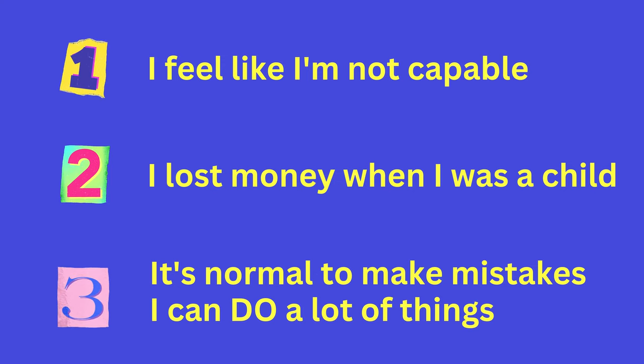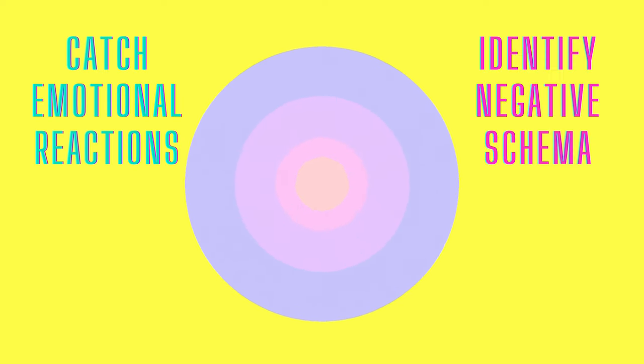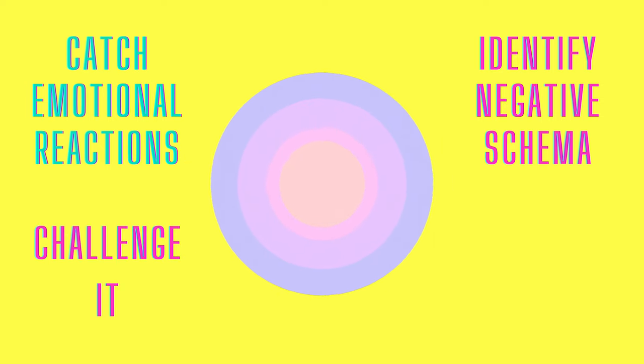This is a simple example to illustrate the three steps to change the self-schema. Of course, the actual situation will be much more complicated. You need to pay attention to identify the moments and scenes that cause your emotional reactions and further strengthen your negative schema and then challenge it with critical thinking.